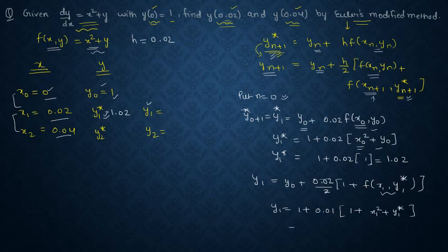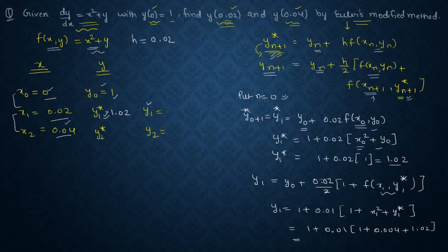So y₁ will be y₀ which is 1 plus 0.01, then 1 plus if you substitute here x₁² plus y₁*, x₁² is 0.02² that means 0.004 and y₁* is 1.02. So if you solve this it will provide you the value of y₁ which is 1.0204.